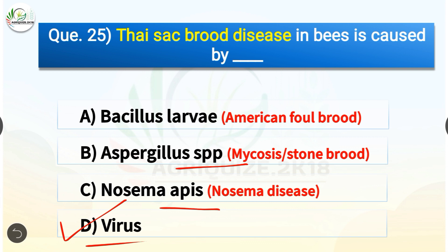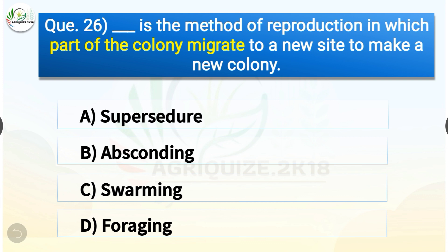Question number twenty-six: Which is the method of reproduction in which part of the colony migrates to a new site to make a new colony? The options are: supersedure, absconding, swarming, or foraging. The correct answer is option C — swarming. Swarming is the method of reproduction in which part of the colony migrates to a new site to make a new colony.